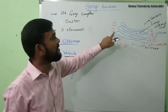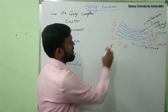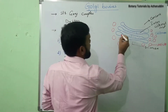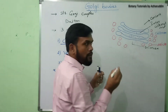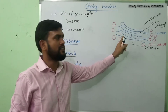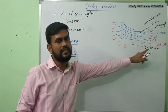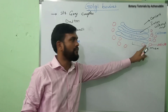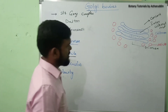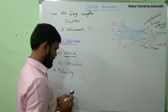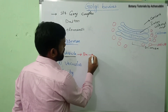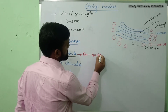Vesicles are formed by budding of the cisternae. The ends of the cisternae are bulged in size and a constriction is formed, after which they are separated from the ends of the cisternae and are then called vesicles. The diameter of vesicles is generally about 40 to 60 angstroms.